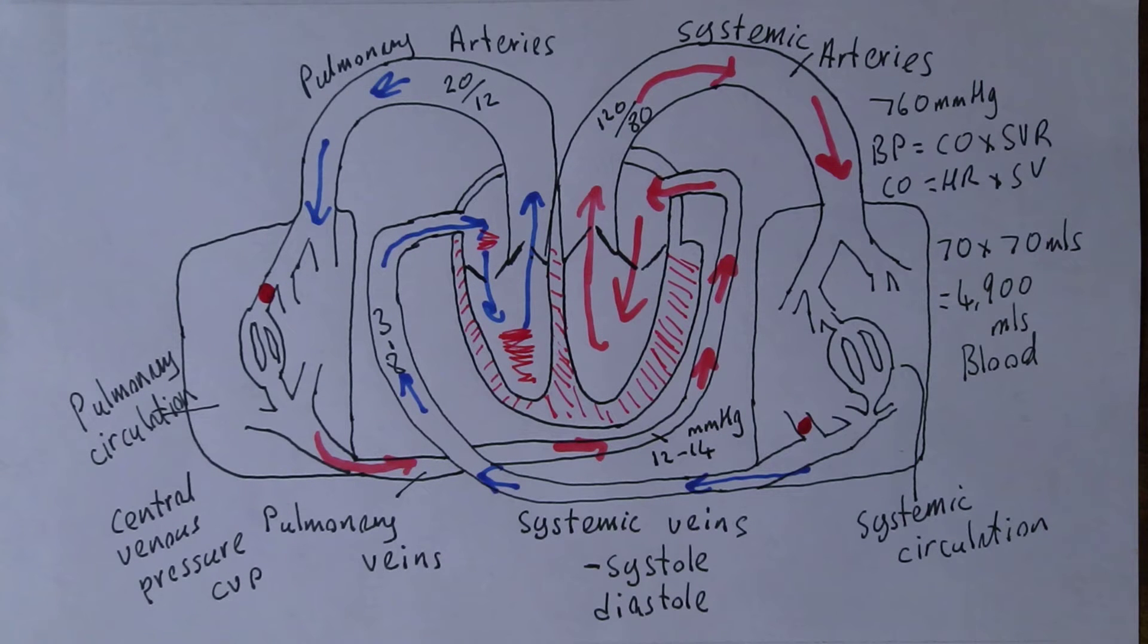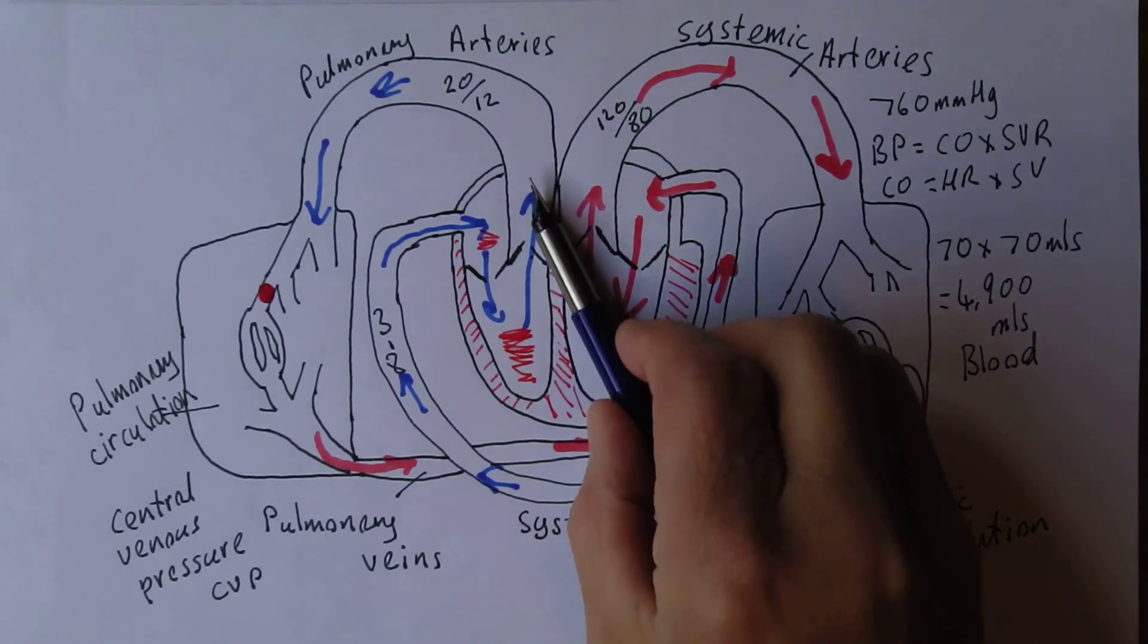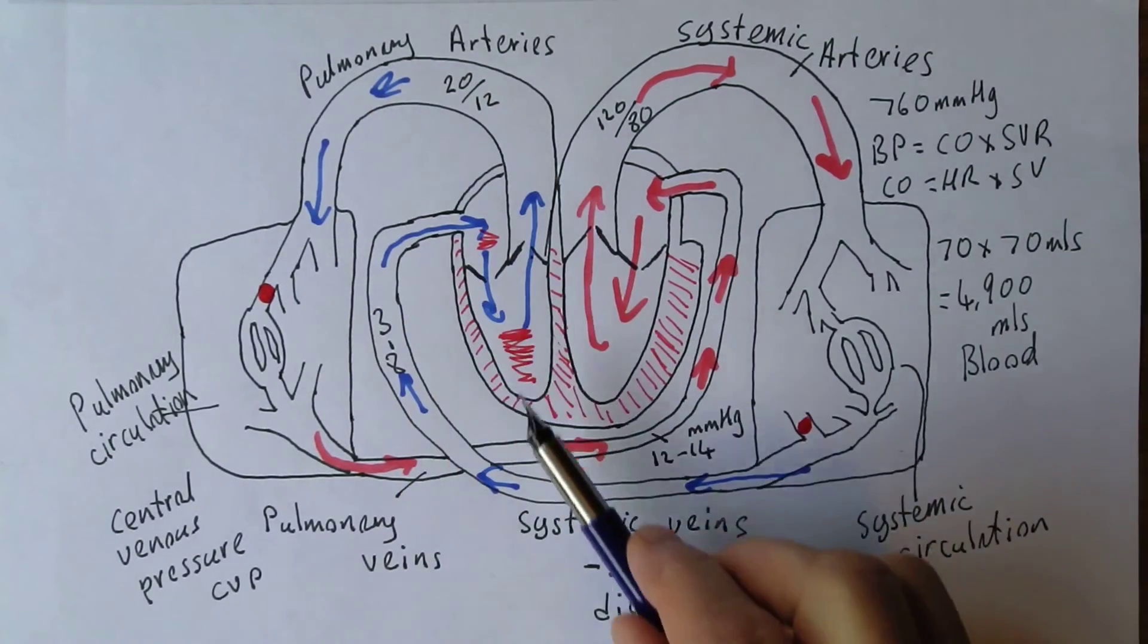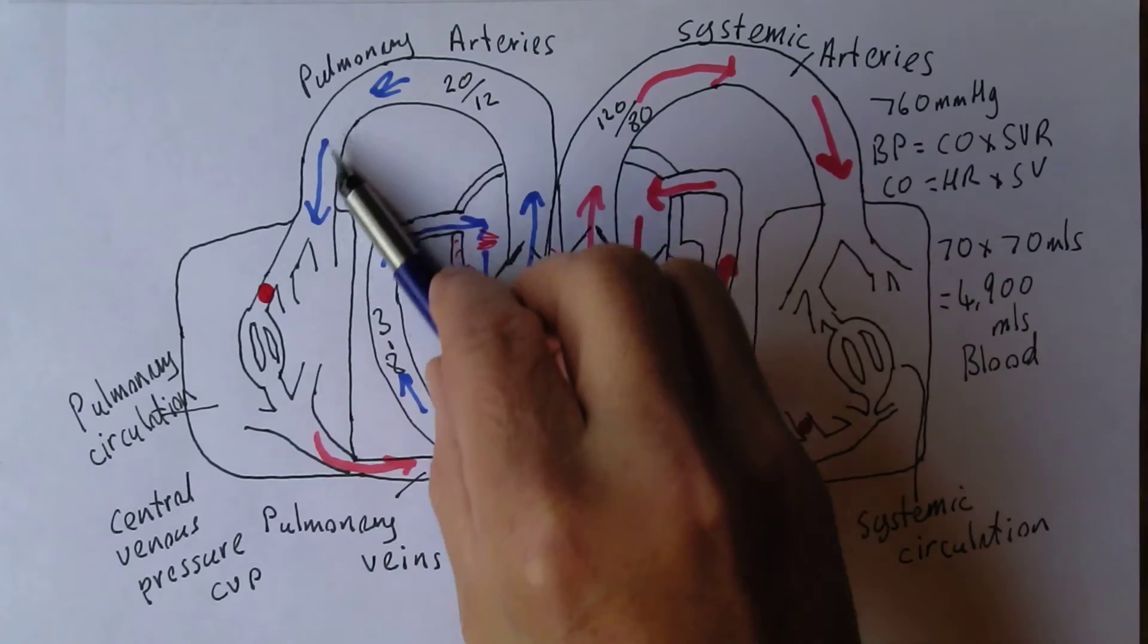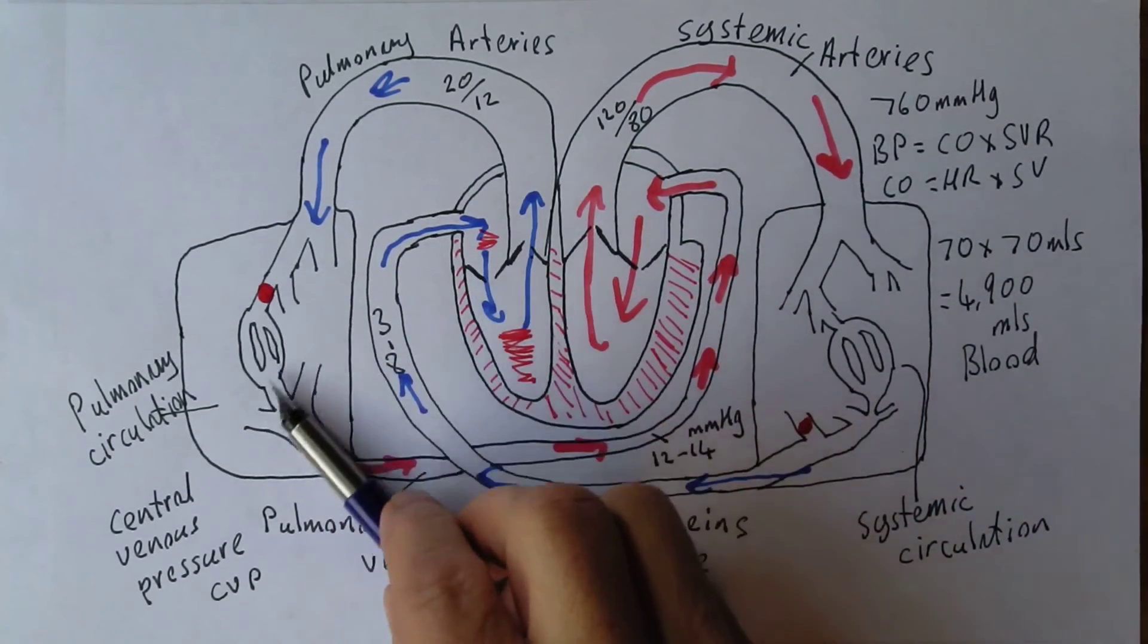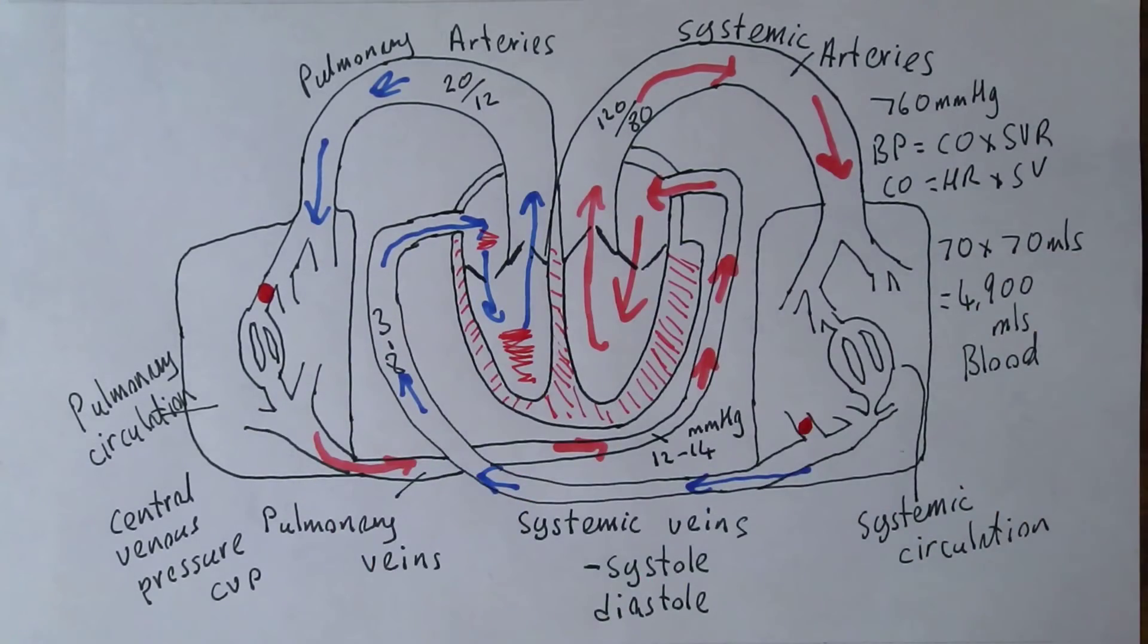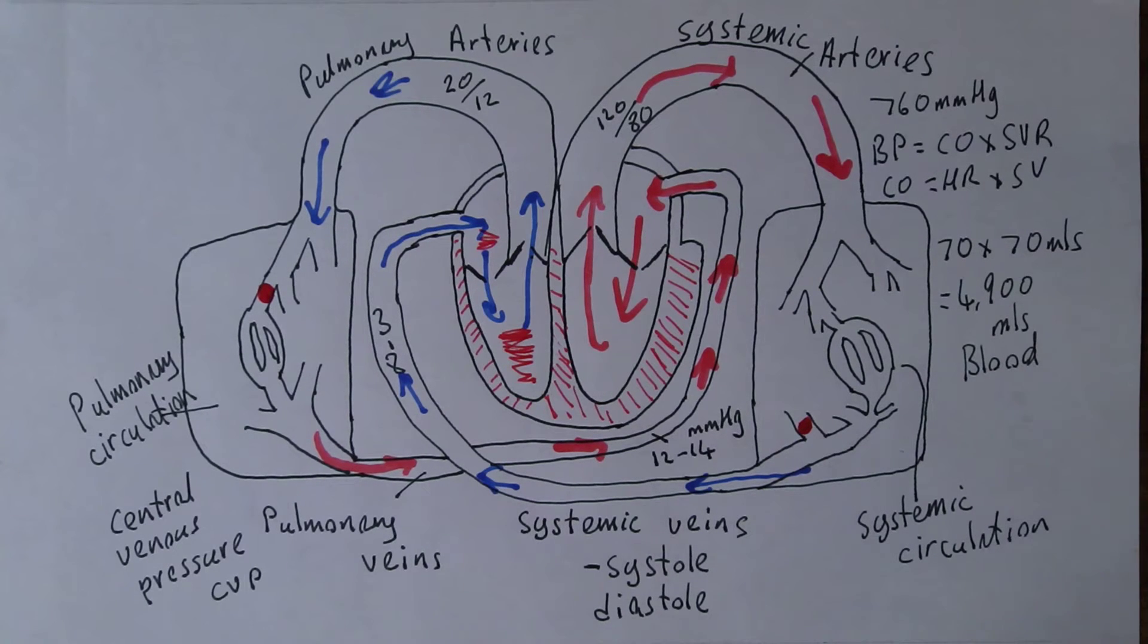Welcome to the second video in this series on disorders of the cardiovascular system where we're looking at it from the perspective of the various blood vessels or the various aspects of the circulation. We've looked at the pulmonary arteries here taking blood from the right ventricle through to the lungs and we've noticed when you might get raised pulmonary arterial pressure.